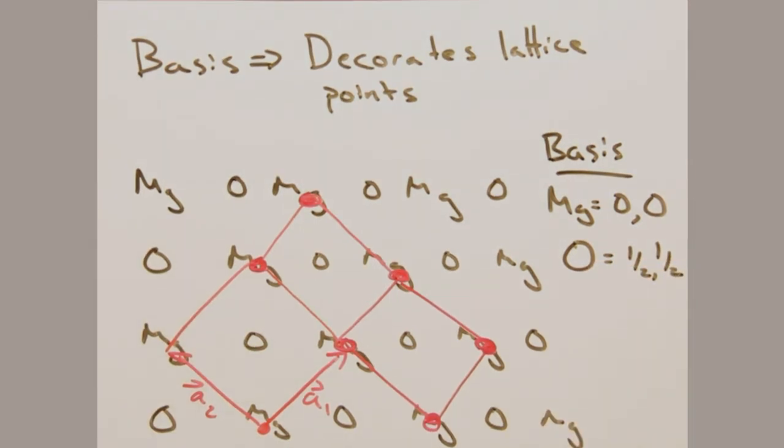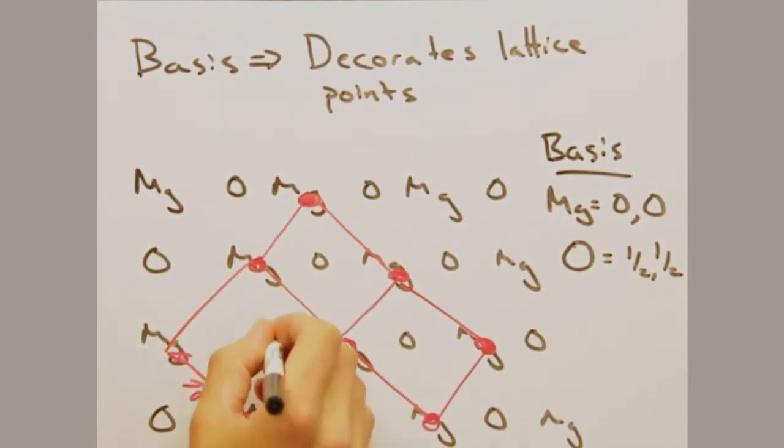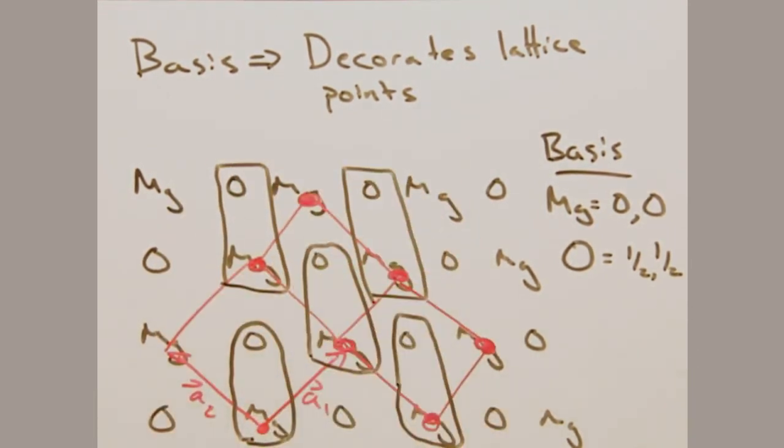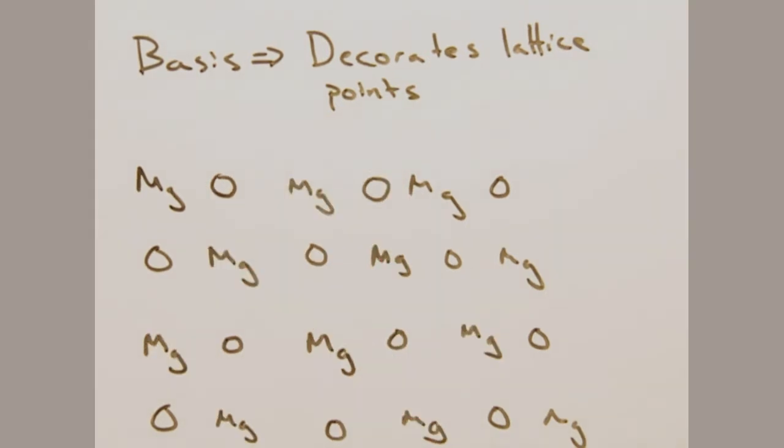But Eric, there are also magnesium atoms here, here, and here. Why don't we include those in our basis? Those atoms belong to the origin of the other unit cells, and we'll simply get created through translation. Okay, I see that now.